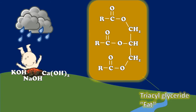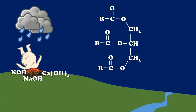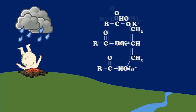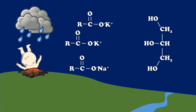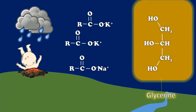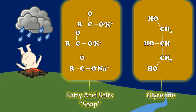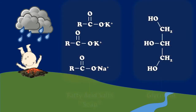Chemists call fat triacylglycerides, and they look like this. It's a pretty complex structure, but it's easily broken down by — you guessed it — metal hydroxides. When those metal hydroxides react with the triacylglyceride, they break some bonds within it, creating two familiar materials: glycerin, which is found in hand creams and used as a precursor to nitroglycerin the explosive, and also fatty acid salts, better known as soap.